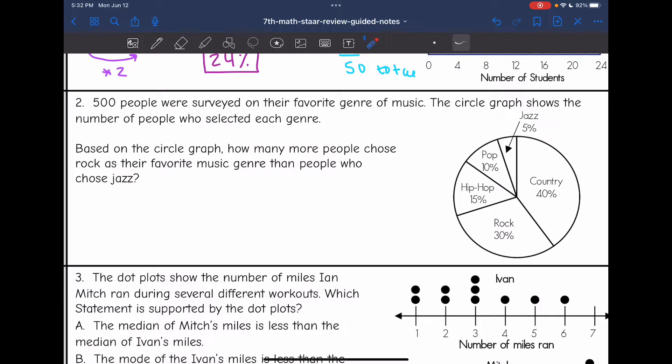Based on the circle graph, how many more people chose rock as their favorite music genre than people who chose jazz? Let's read that again. How many more people chose rock as their favorite music genre than people who chose jazz? So in the pie chart, it tells me that 30% of people chose rock and 5% of people chose jazz.